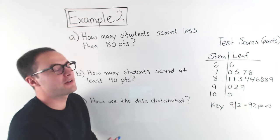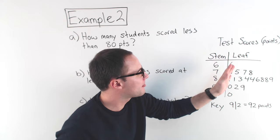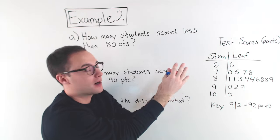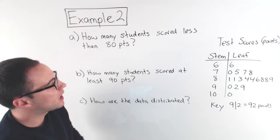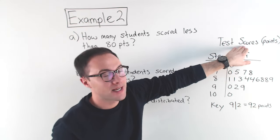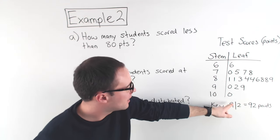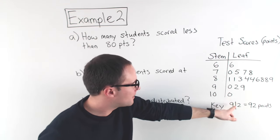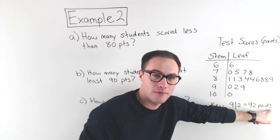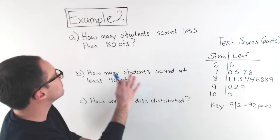Okay. Example 2. We've got three different questions. Notice, we already have the stem and leaf plot over here. So, instead of making it, now we're interpreting a stem and leaf plot. So, let's just look over this real quick. The data is about test scores and points. Notice our key here: 9 for our stem and 2 for our leaf means that represents 92 points on the test.